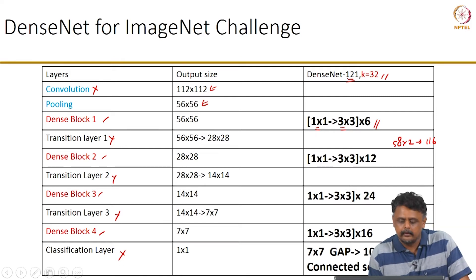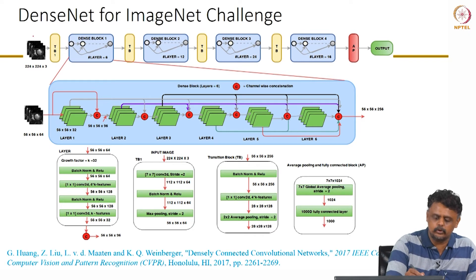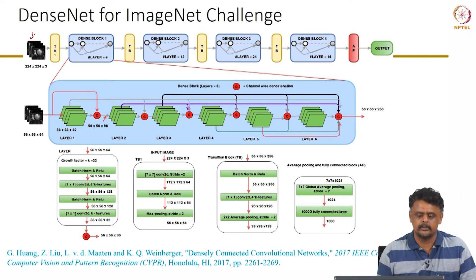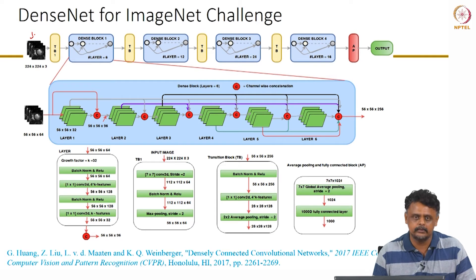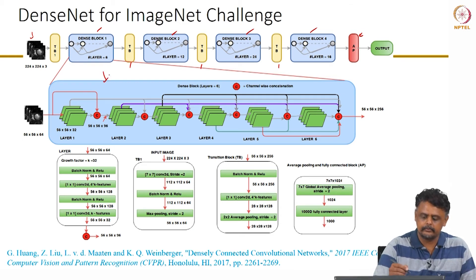The DenseNet-121 for the ImageNet challenge uses RGB images. The network has 4 dense blocks with 3 intermediary transition blocks, followed by a global average pooling block which connects to a 1000-dimensional softmax output.